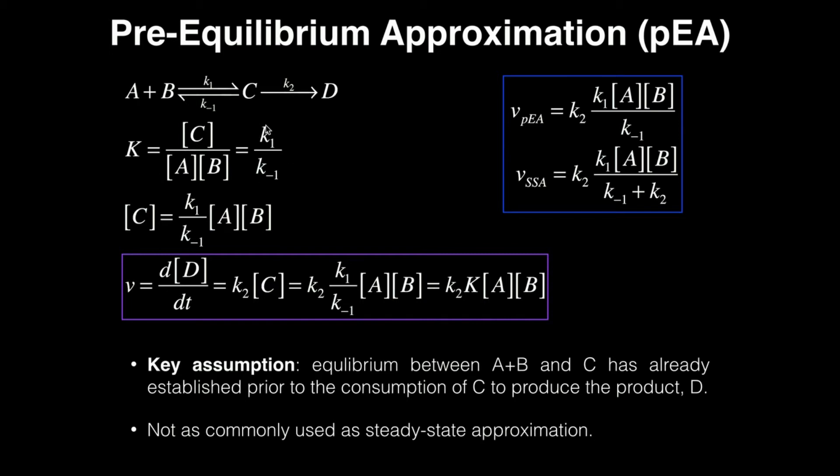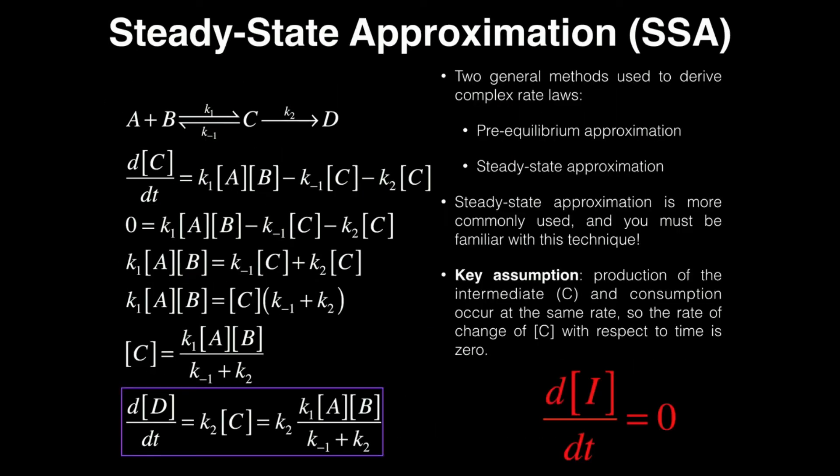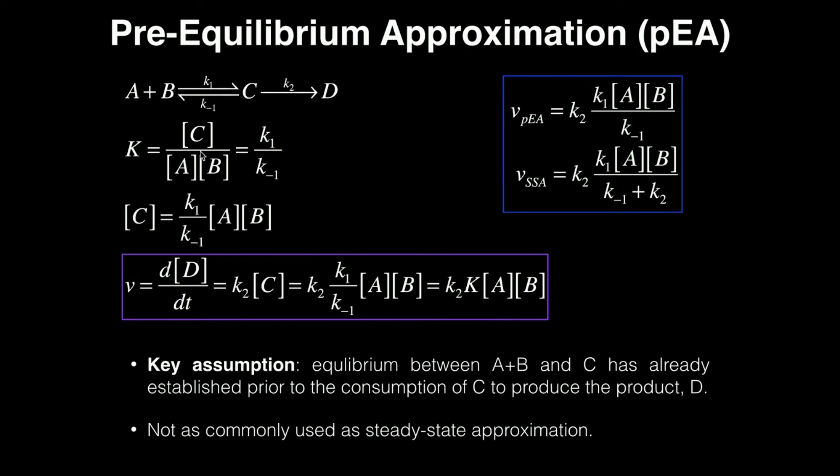That's very important to remember because what I can do is rearrange this expression. Now the question is, how do I rearrange it? Well, remember back in the steady state approximation when we talked about how we wanted to solve for the concentration of the intermediate, which in this case was C. We're actually going to do the same thing here.